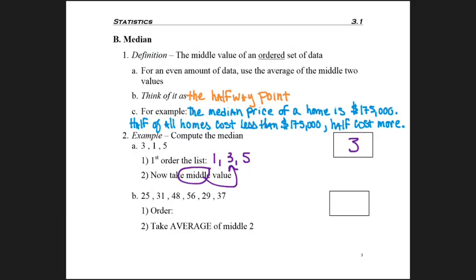Now let's look at problem 2b. I'm asked to find the median. Here it doesn't matter whether it's a population or a sample. Remember, I need to double check that the list is in order: 25, 31, 48, 56.